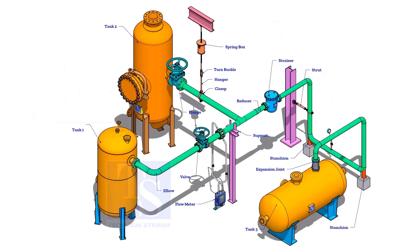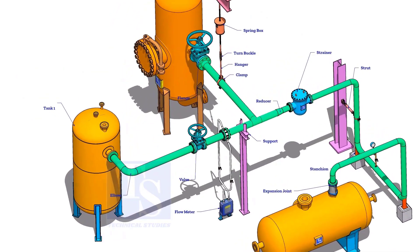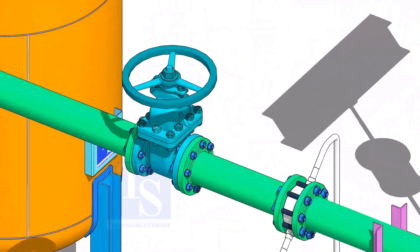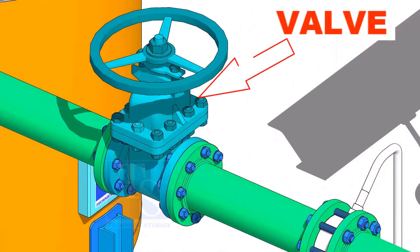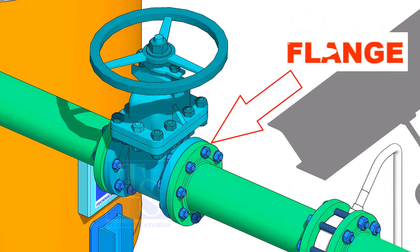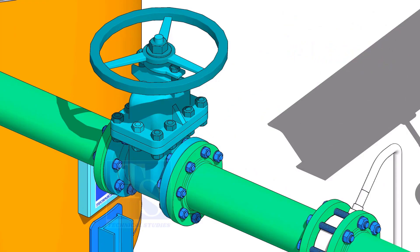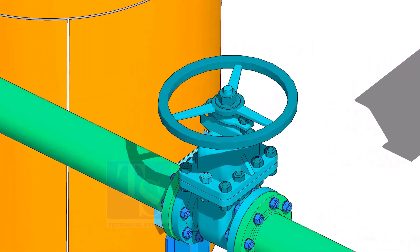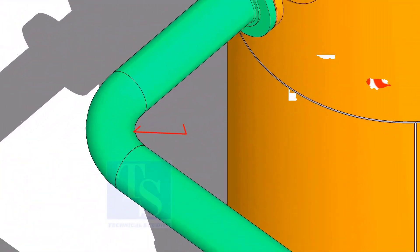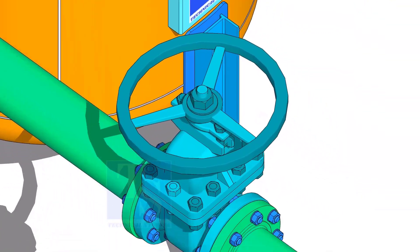Let us have a look at some important piping components: Valve, Flange, Elbow, Tee.